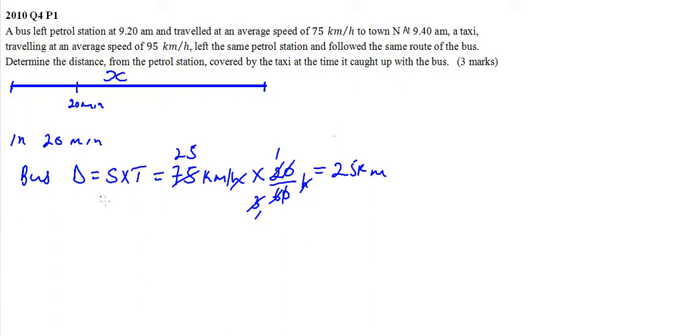Now, the time the taxi took from the petrol station to the point where it overtook the bus is the same time the bus took from after 20 minutes to the point where it was overtaken. The taxi time equals the total distance divided by the speed, which is 95.